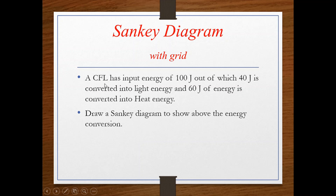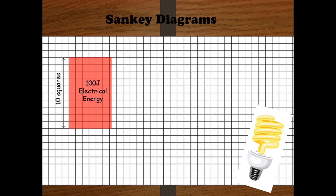We have a CFL with 100 joule input. Light energy of 40 joule is the useful energy and 60 joule of heat energy is a byproduct. Before drawing the Sankey Diagram, we must understand which is useful energy and which is waste energy, because we draw the useful energy first and the wasted energy later. Here on the grid, I first think about the scale.